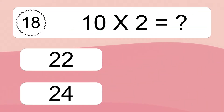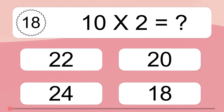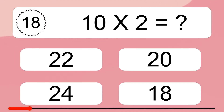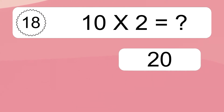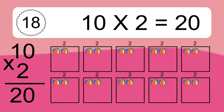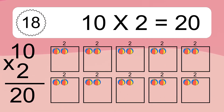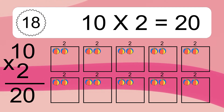10 times 2 equals what? 10 times 2 equals 20. We have 10 boxes, and each box has 2 colorful balls inside. If you count all the balls in all the boxes together, you will have 10 times 2 balls. This equals 20 balls.